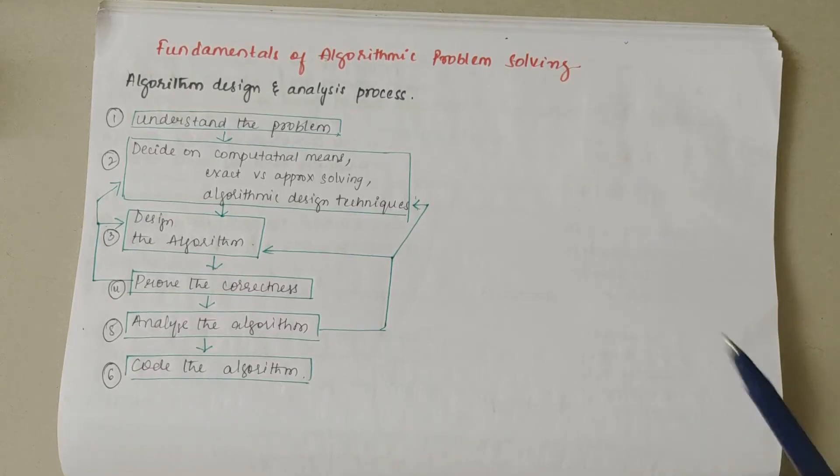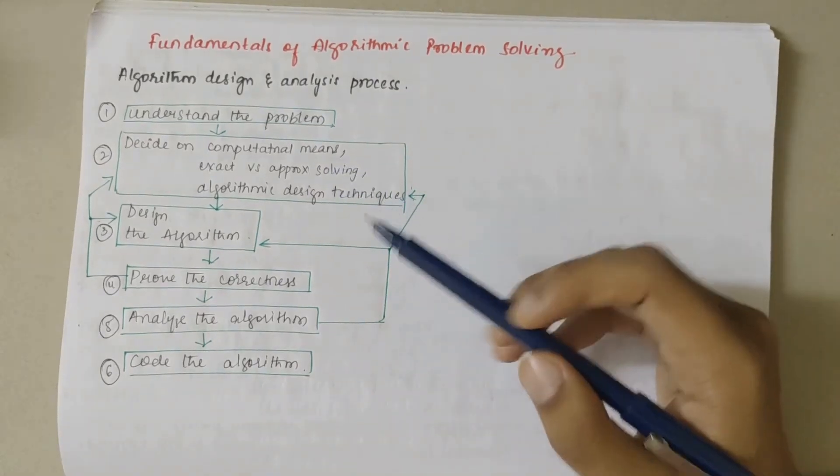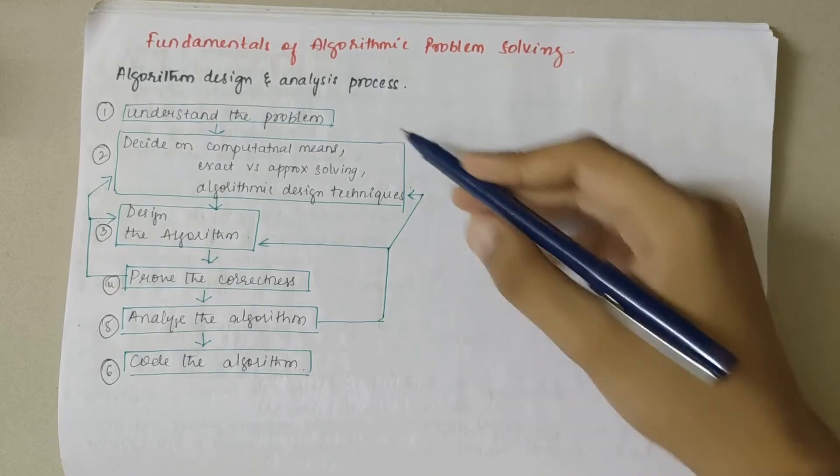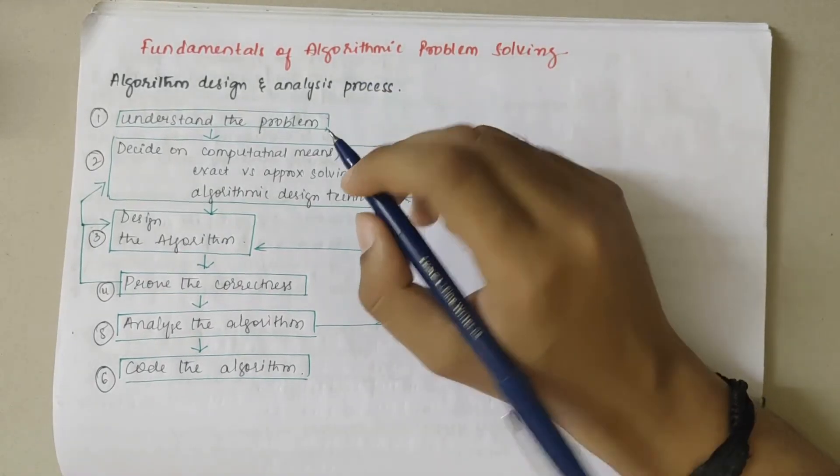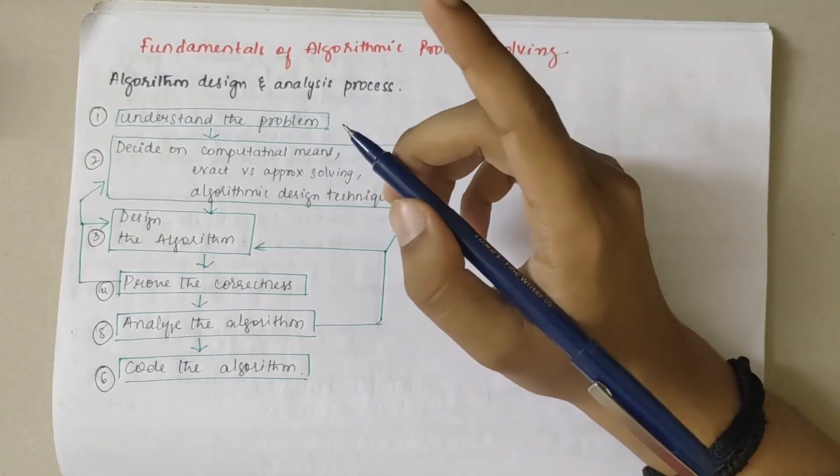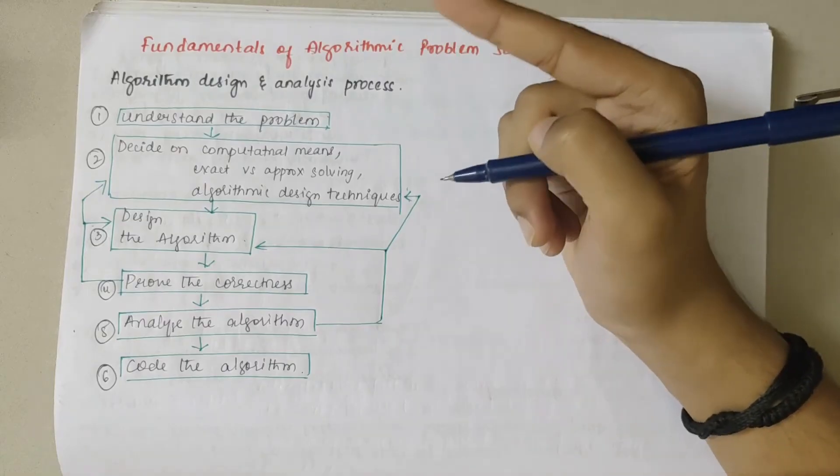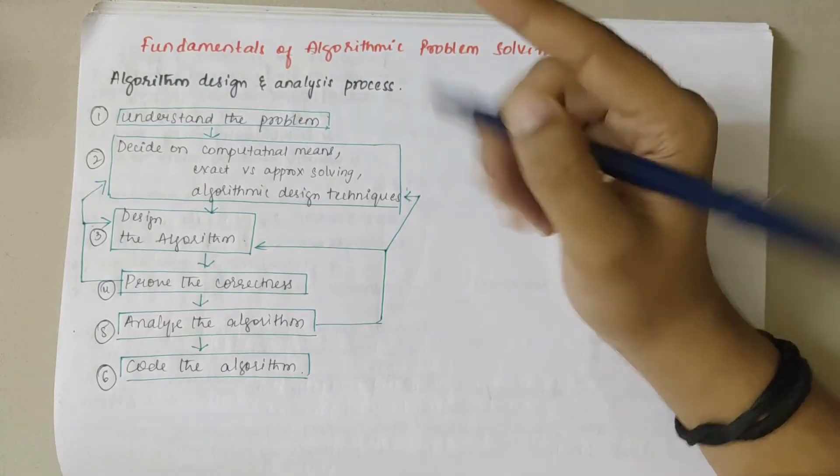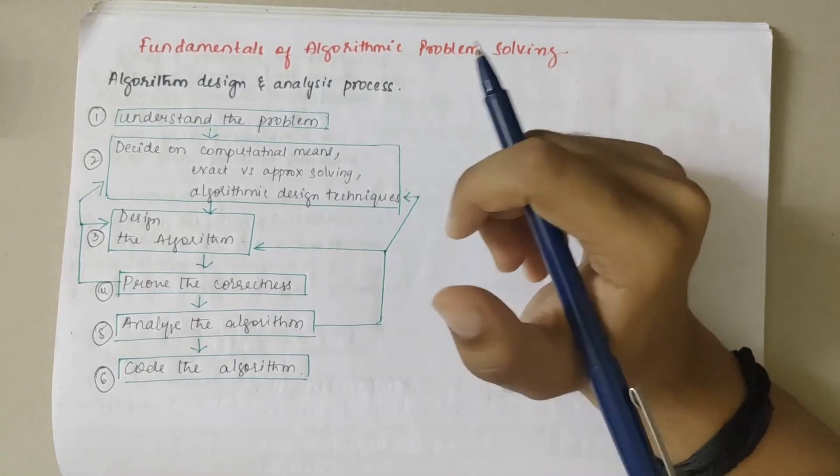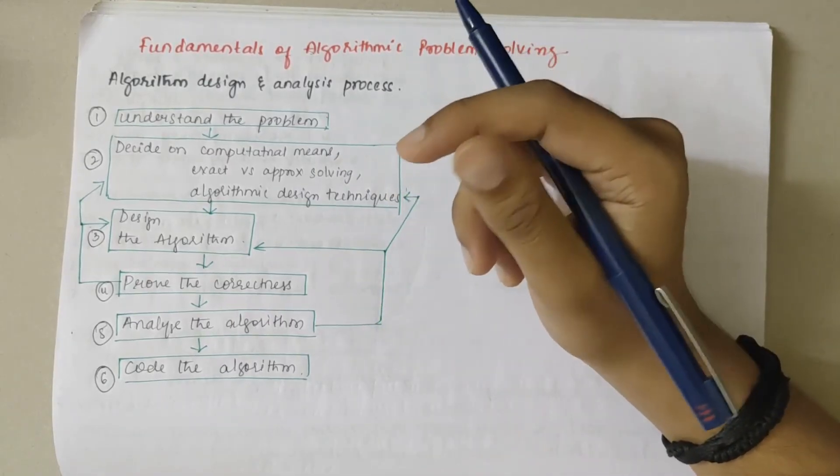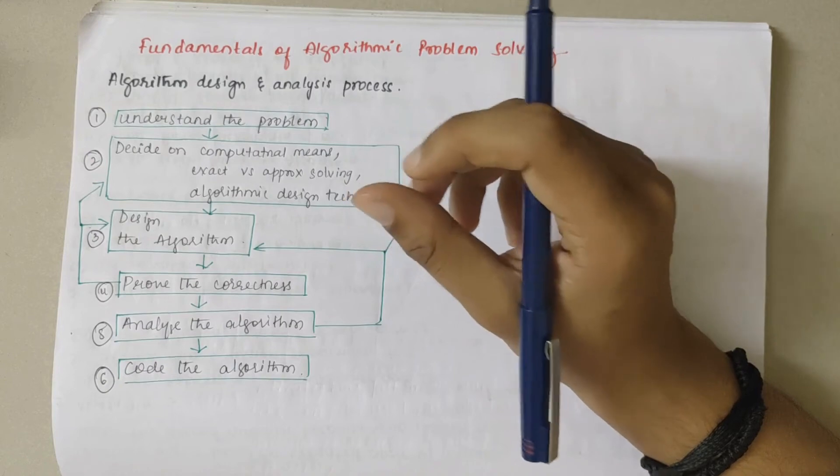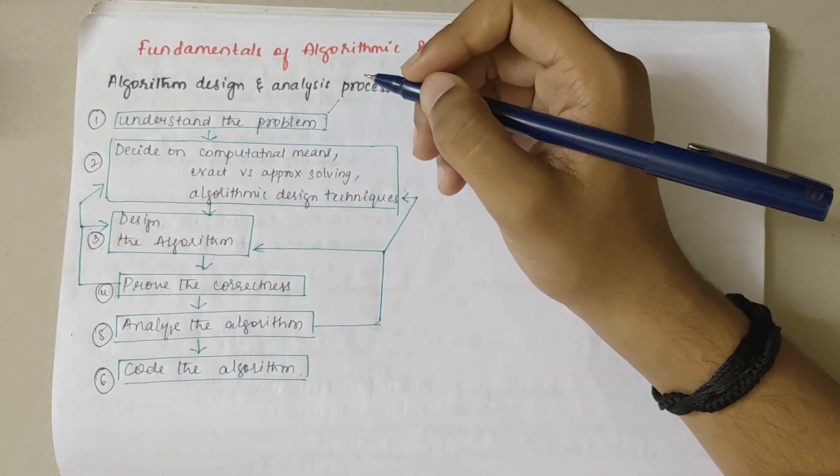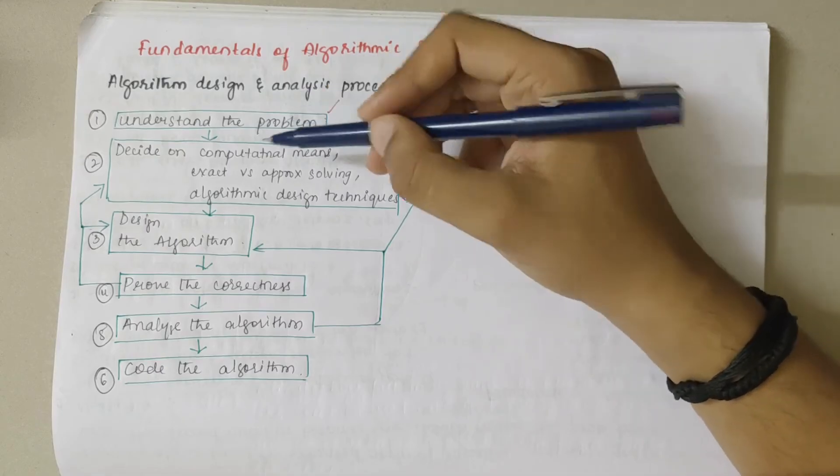This is the flowchart of fundamentals of algorithmic problem solving. We will now briefly discuss the sequence of steps one typically goes through in designing and analyzing an algorithm. The first step is to understand the problem. From a practical perspective, the first thing we need to do before designing is to understand the problem. There should be an input to the algorithm that specifies a particular instance of the problem the algorithm solves. It is very important to specify exactly the set of instances the algorithm needs to handle.